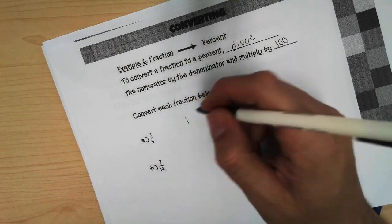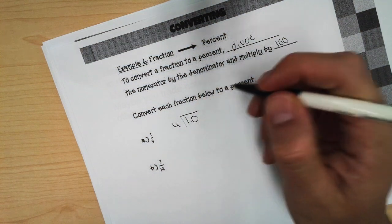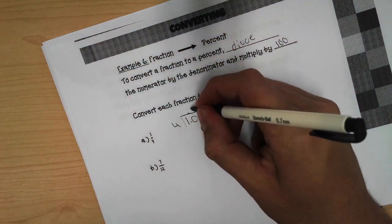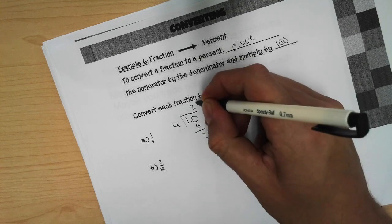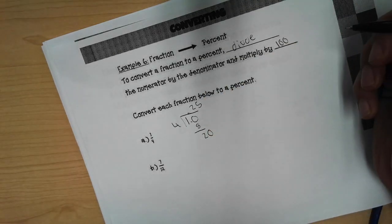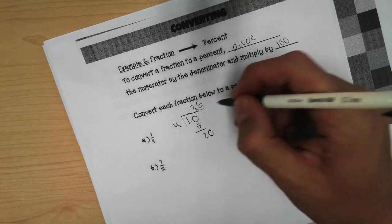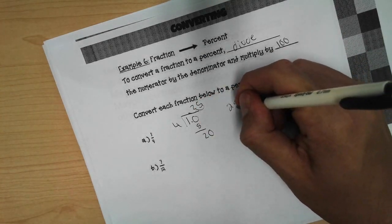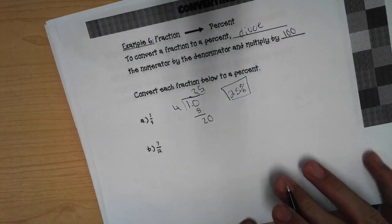So one divided by four. You get two with eight left over. Add a zero. And multiplying by a hundred is the same thing as moving the decimal over two places to the right. So we get 25 percent. So one-fourth is equivalent to 25 percent.